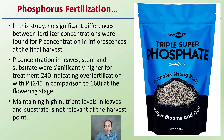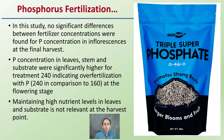When looking at phosphorus fertilization, no significant differences between fertilizer concentrations were found for phosphorus concentrations in the inflorescence at the final harvest. Phosphorus concentration in leaves, stems, and substrate were significantly higher for the highest treatment, indicating overall excess fertilization with phosphorus at the flowering stage. Maintaining high nutrient levels in leaves and substrates is not relevant at harvest — adding too much can lead to negative effects or increased cost with no benefit in the end product.